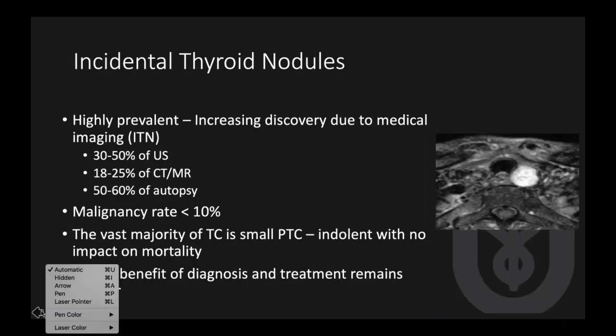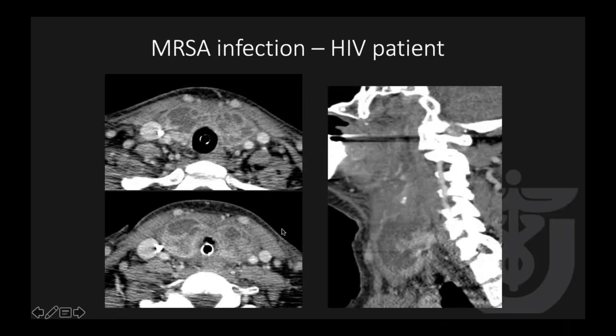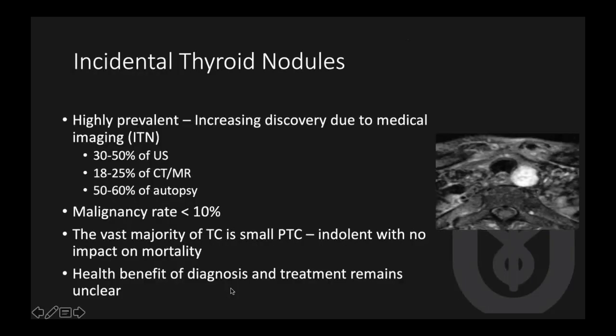When you have bilateral extensive infection in the thyroid gland — again, the thyroid doesn't usually get bacterial infections — most likely the patient has an immunocompromised status, such as this HIV patient with MRSA infection. So often those are patients with immunocompromised status.